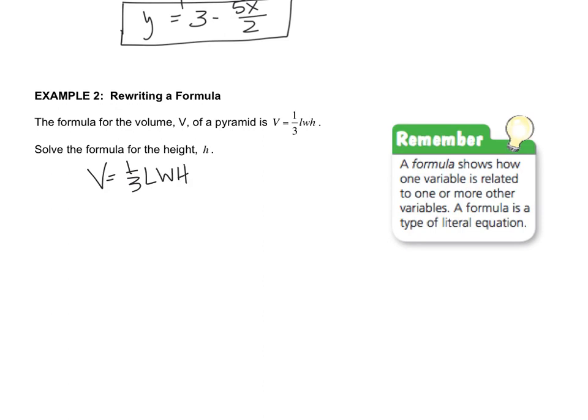Now the first thing that makes this equation look really complicated is this one third. I want to get this one third away because it's making the equation look more complex. So if you think back to lesson 1.1, how do you inverse one third? The answer is multiply by the reciprocal. So that cancels, and then I do 3 over 1 over here, or just 3. Then I get 3V equals LWH.